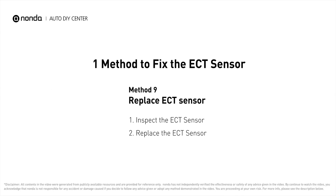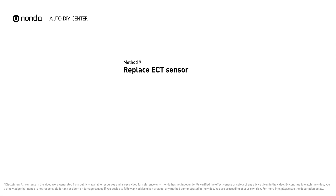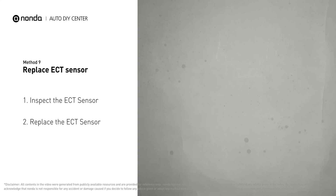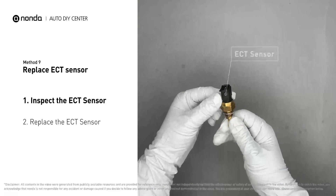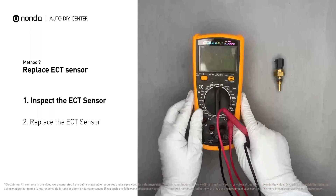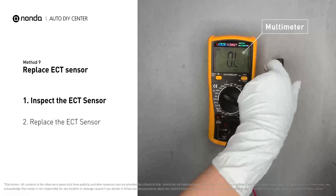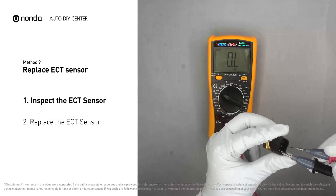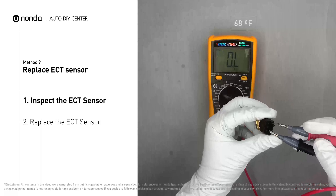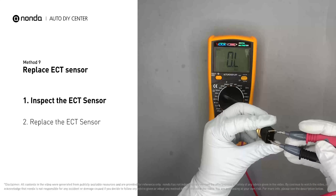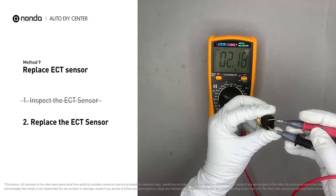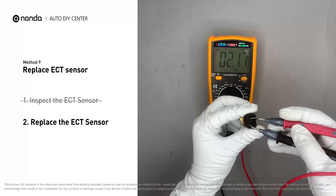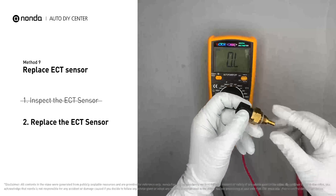Method 9: Replace the ECT sensor. Remove the ECT sensor from the engine and use a multimeter to test it. At an ambient temperature of 68 degrees Fahrenheit, the sensor resistance should be between 2000 ohms to 3000 ohms. If you do not get a reading in that range, this indicates the ECT sensor is faulty and needs to be replaced.